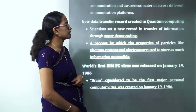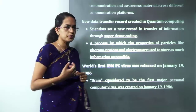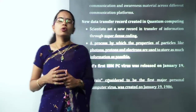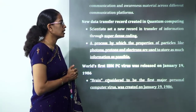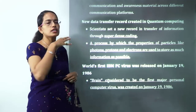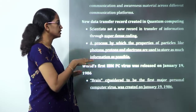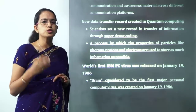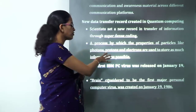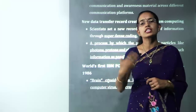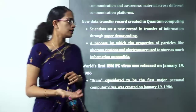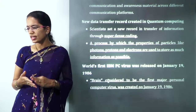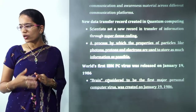New data transfer records have been created using quantum computing. In the last class we discussed qubits as the units for quantum computing. Under qubits, super dense coding is a method of transferring information that uses three important elements: photons, protons, and electrons. A likely exam question is: which of the following is not used in the super dense coding system?